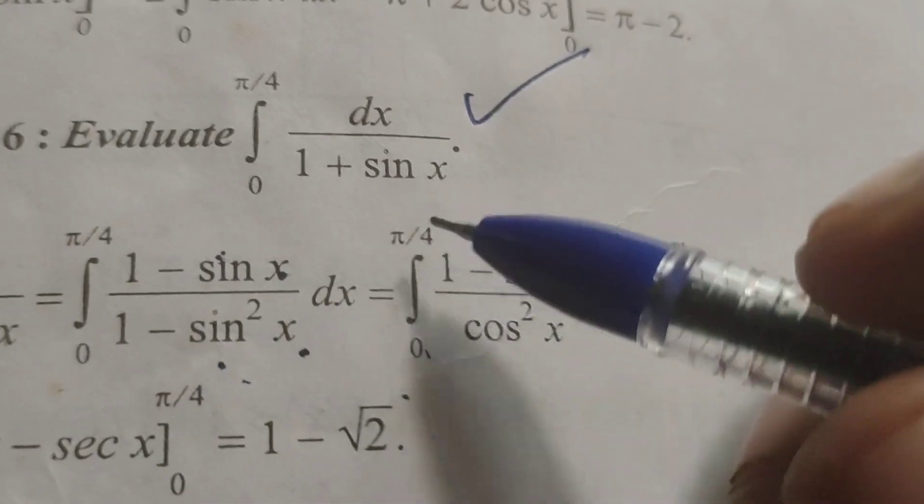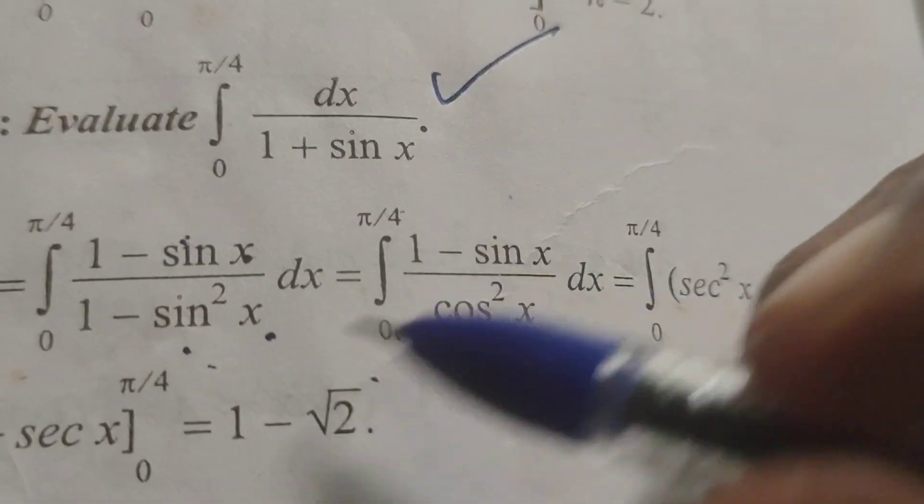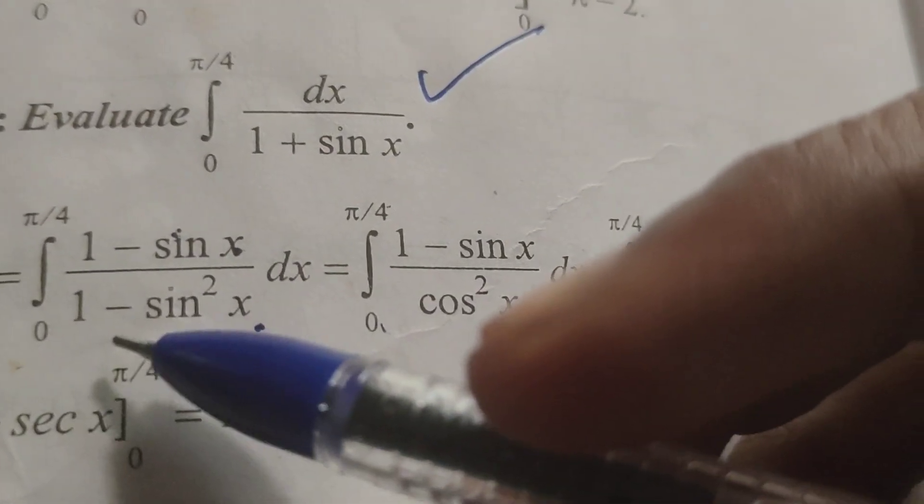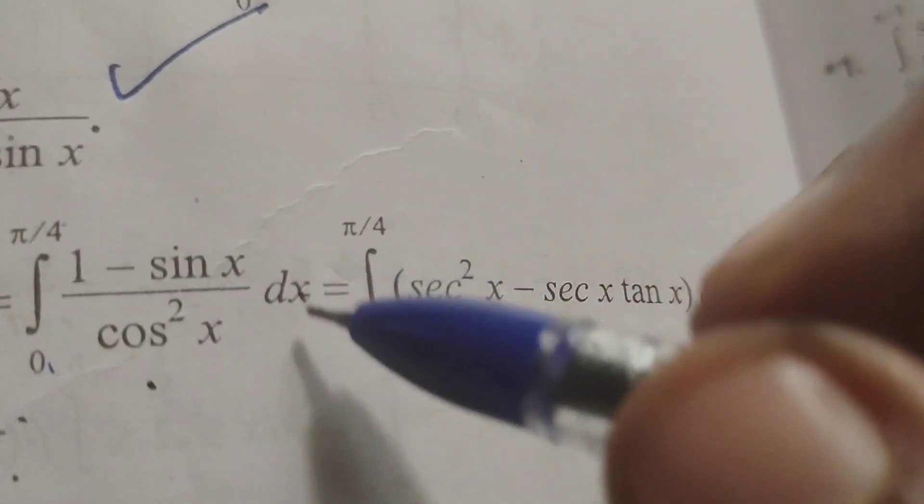That equals to integral of 0 to pi by 4, 1 minus sin x over cos square x dx, since 1 minus sin square x equals cos square x.